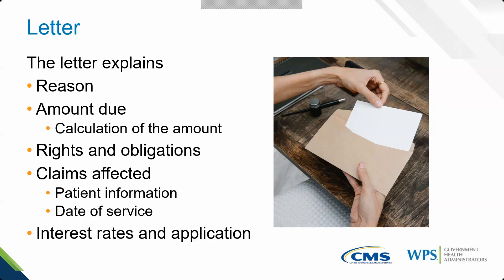We send the letter to the provider to identify them. We use information in PECOS — the Provider Enrollment Chain and Ownership System — to send this letter. When your information is not correct in our enrollment system, you're not going to necessarily get this letter. That's why it's key to keep enrollment information up to date. The letter will also explain our interest rates and how they will apply — if you don't pay back within a certain number of days, we're going to start charging interest.